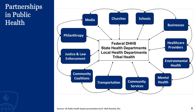This diagram shows how government agencies partner and work with different stakeholders to promote a public health objective. Some notable stakeholders include the media, churches, schools, businesses, local health care providers including hospitals, and mental health providers. There has been increasing work going towards transportation and community services, as well as on the justice and law enforcement side of things.